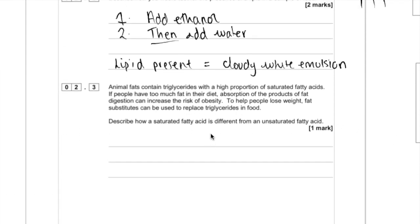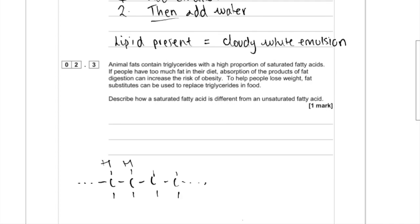In this last part, they've given you a small paragraph about saturated fatty acids being in your diet and obesity. I'll let you read that yourself. But the question is, describe how a saturated fatty acid is different from an unsaturated fatty acid. The clue's in the name. If you think about a saturated sponge, that means it's full with water. So it's exactly the same except a saturated fatty acid is full with hydrogen. So I'll show you what that would look like. You can see each of these carbons are bonded to a hydrogen. This is a saturated fatty acid.